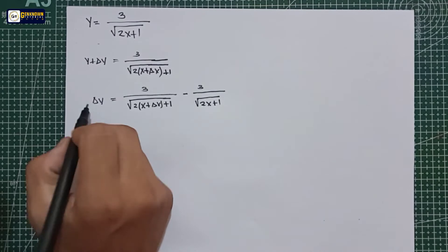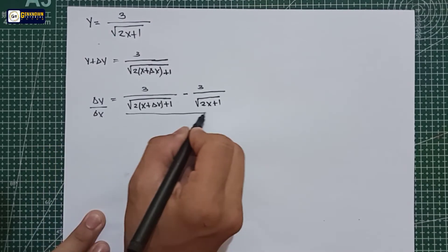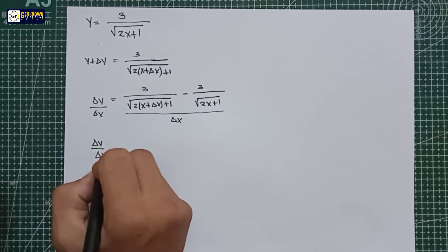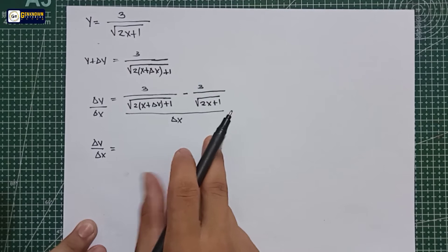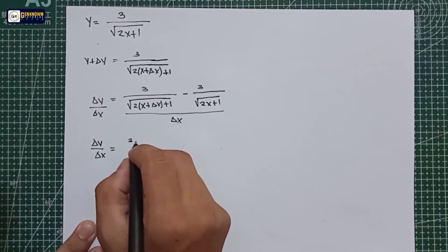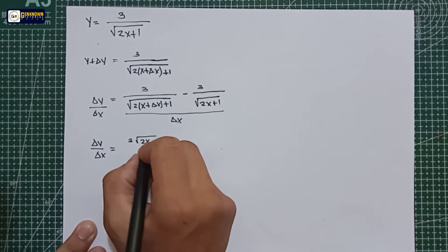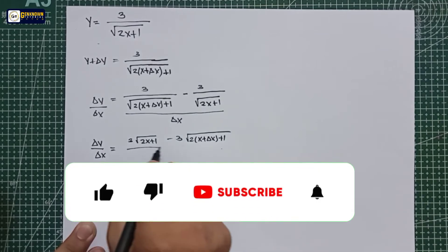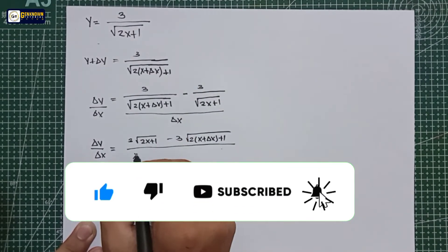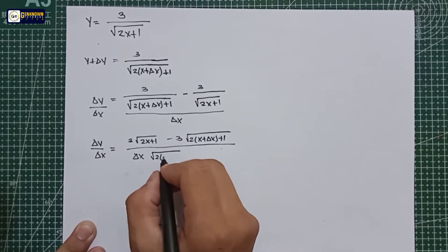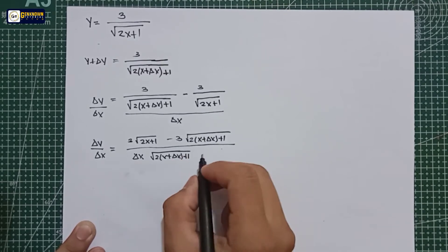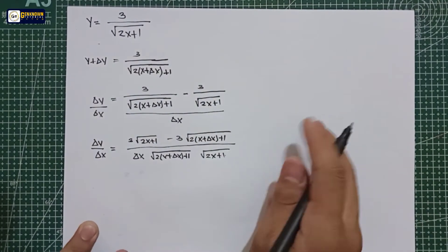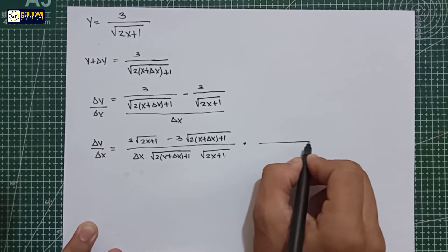The next step is to divide both sides by delta x. To simplify, we have delta y over delta x. We will use the butterfly method to add or subtract the numerator. The outcome in the numerator is: 3 times the square root of 2x plus 1, minus 3 times the square root of 2x plus delta x plus 1, all over by the square root of (2x plus delta x plus 1) multiplied by the square root of (2x plus 1) times delta x. Next step is to rationalize the equation.